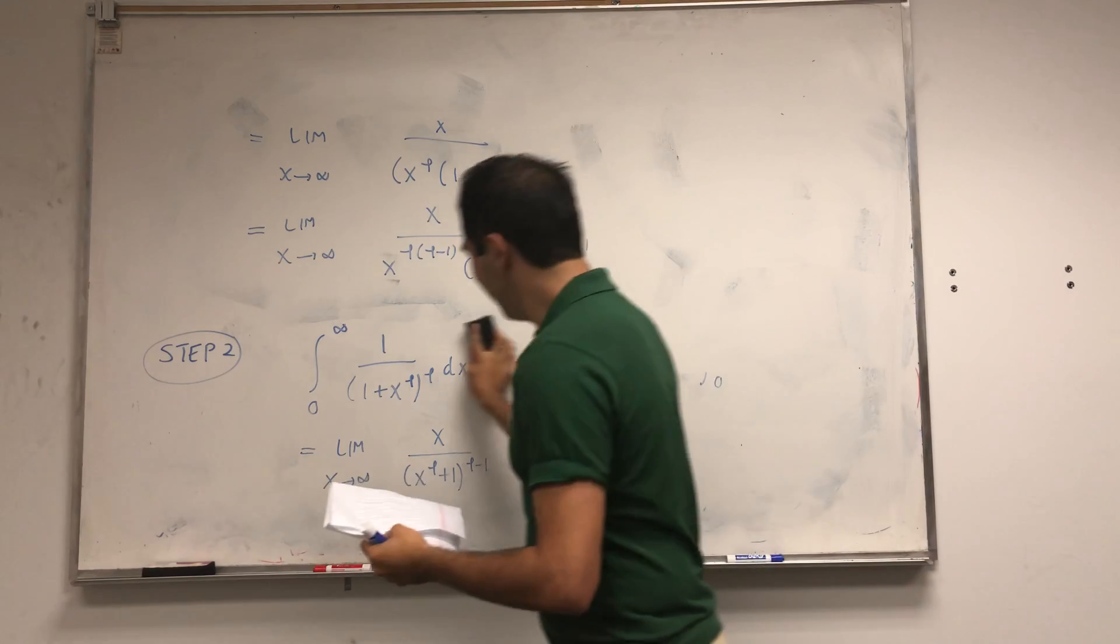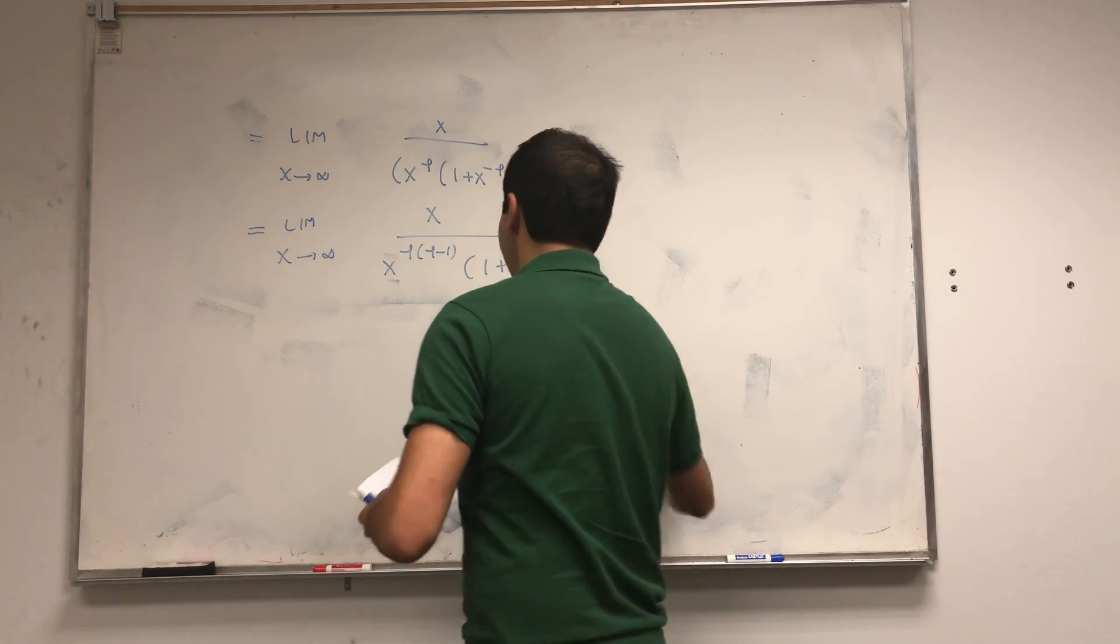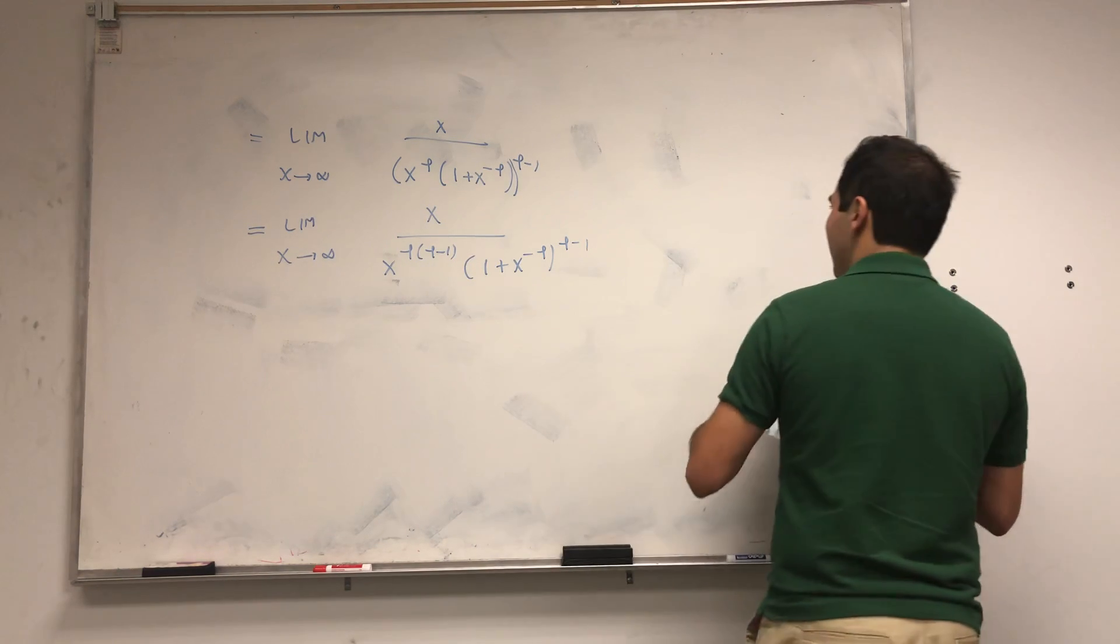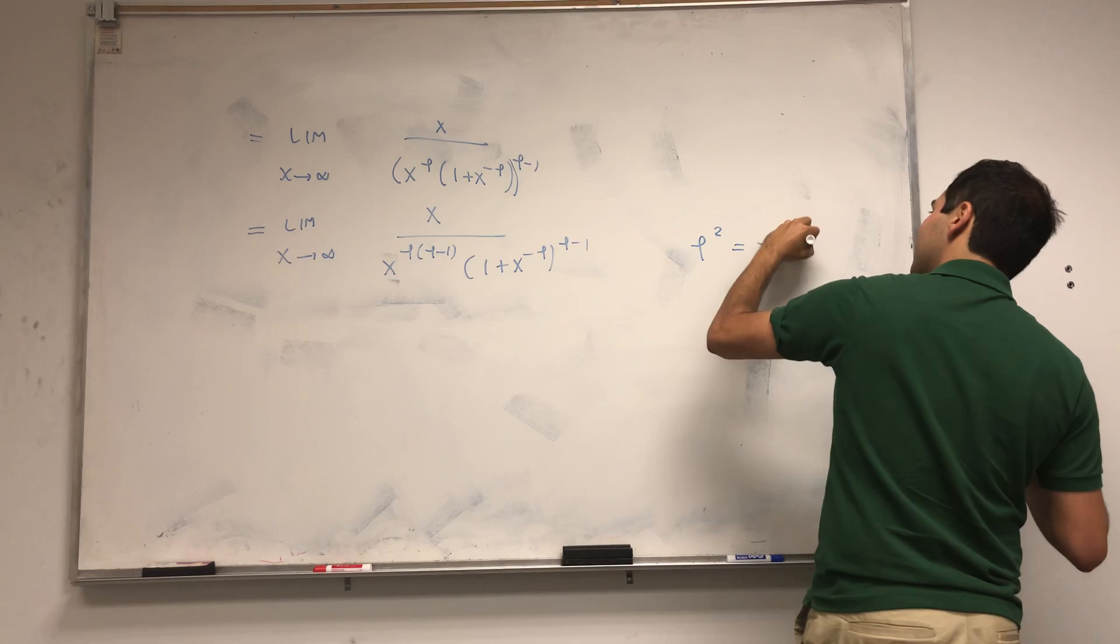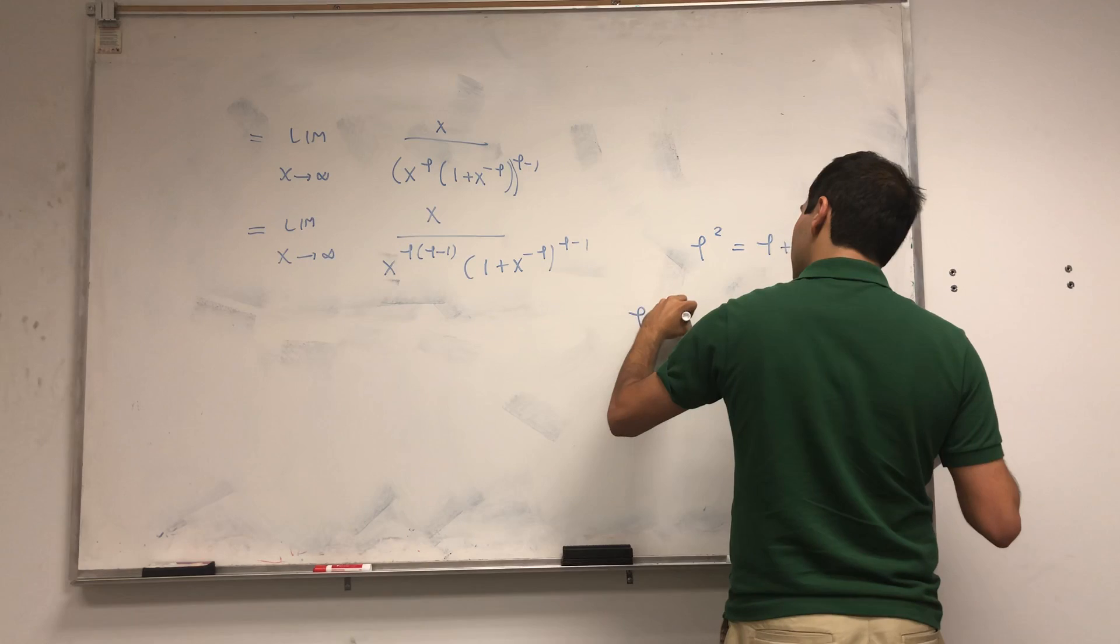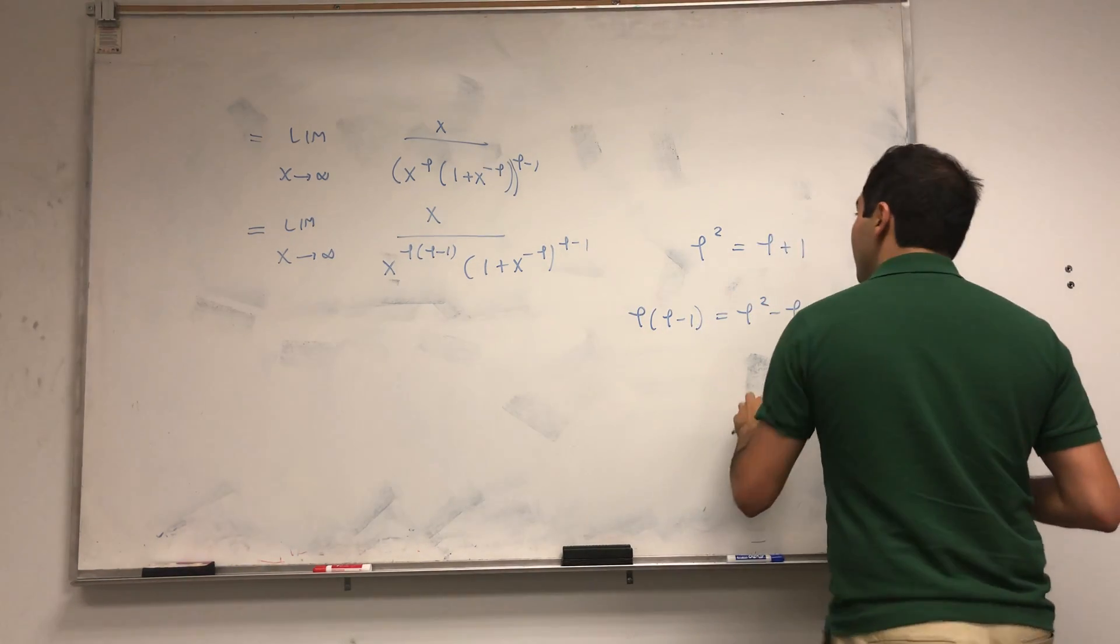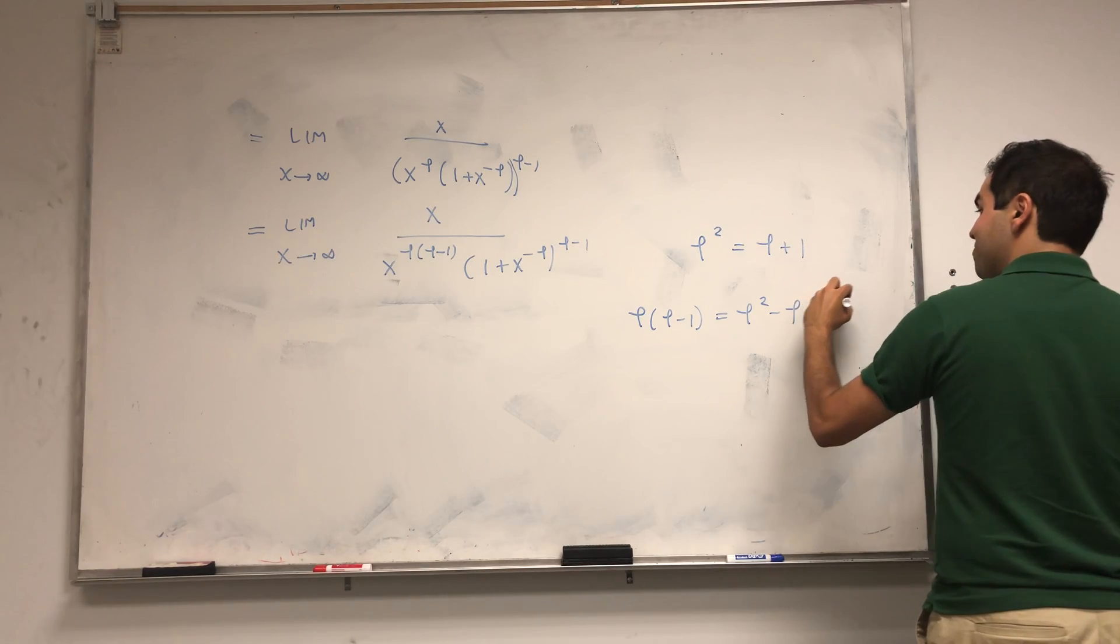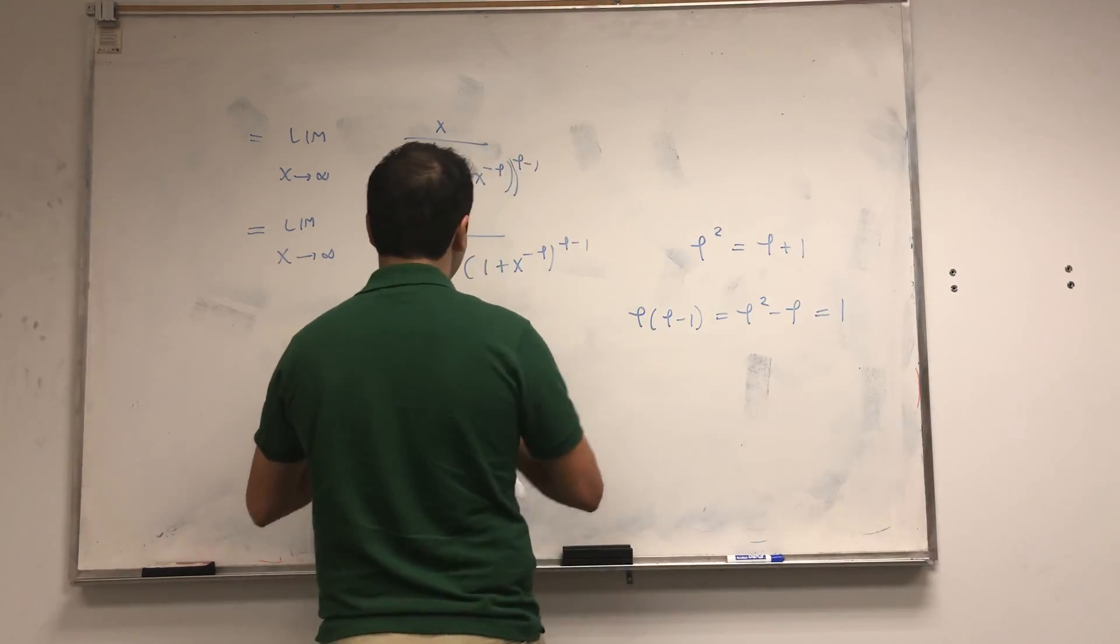But remember, we do have the golden equation for phi. We do know that phi squared equals phi plus 1. In particular, this phi times (phi-1), that's phi^2 - phi, and that becomes 1. So in other words, this really complicated factor here is just one.